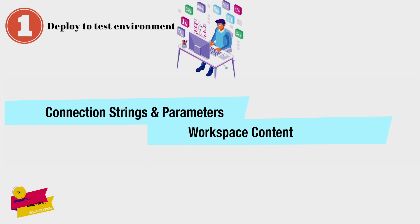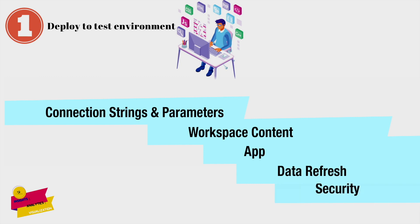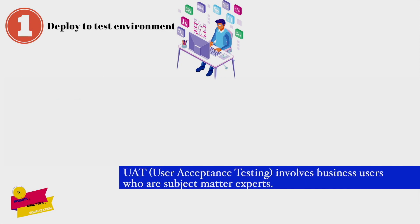Other key activities in the test workspace include publishing an app using the content for the test workspace if it forms part of the UAT process — app permissions are typically restricted to a smaller number of people involved in UAT. You also set up scheduled data refresh for any import datasets during UAT. Finally, for security, update or verify workspace roles, as testing workspace access includes only a small number of people involved in UAT. Always remember these key activities during deployment to the test workspace, where user acceptance testing is also conducted.